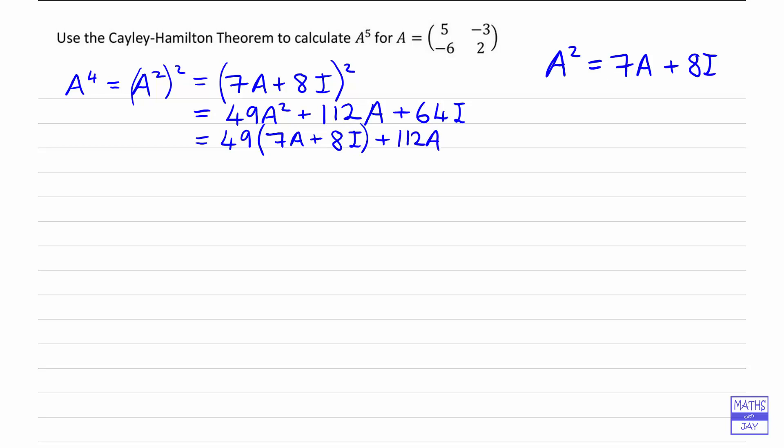So you can see now why it is that each time we do this process, matrix A to any power can be written as something times A plus something times I. So let's simplify this. We've got 343A and 392I, leaving the other two terms at the end. And then we can simplify it. So we're going to have 455A and 456I. So we've written A⁴ as something times A and something times I.